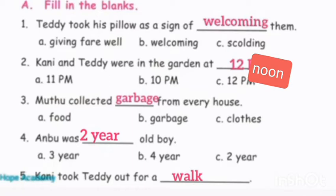Page number 98, fill in the blanks. First one: Teddy took his pillow as a sign of dash — the answer is 'welcoming.' Canny and Teddy were in the garden at 12 noon. Muthu collected dust from every house garbage, G-A-R-B-A-G-E. Boo was a two-year-old boy, and then he took Teddy out for a walk.